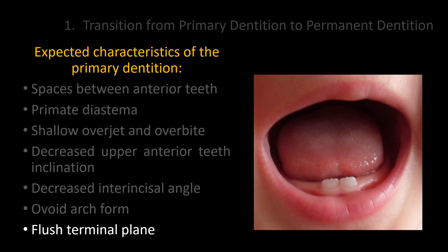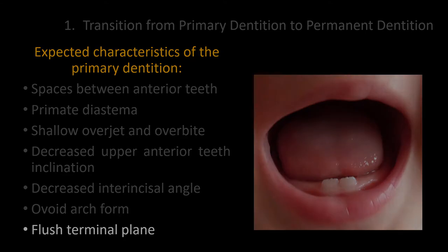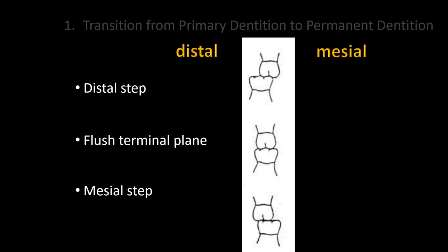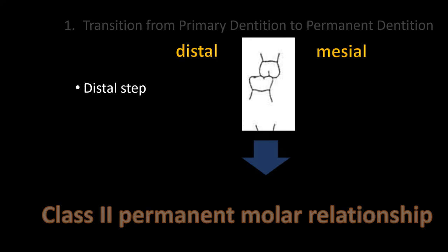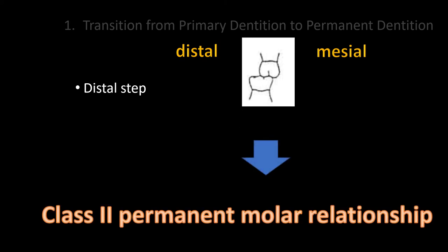The flush terminal plane is the normal molar relationship considering the second primary molars. There are three types of molar relationships in the deciduous dentition. The class III primary molar relationship is rarely seen except in severe skeletal discrepancies. It is important to know that the distal step in the primary dentition always leads to a class II molar relationship in the permanent dentition.